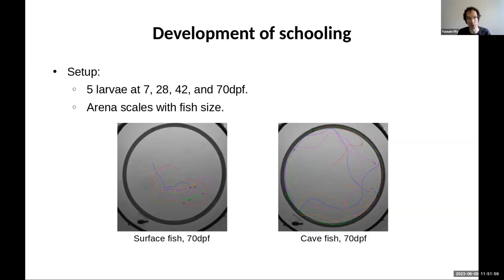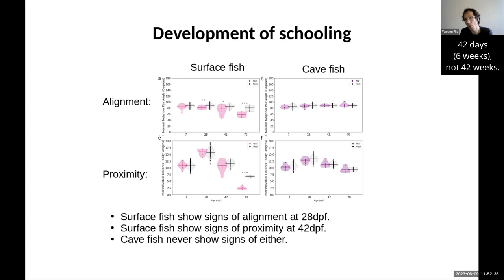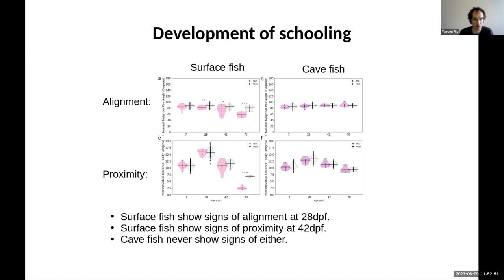The first thing we look at is statistics of the angle between nearest neighbors and the distance between nearest neighbors. Without going into all the details, we see the first sign of alignment in surface fish at four weeks, and then the first sign of a preference for proximity at 42 days — the next time point. The signal is not very strong, so there's still a chance they develop together, but this suggests alignment may develop slightly before proximity. With cave fish, it's very clear that they develop neither a preference for alignment nor a preference for proximity at any point during their development.